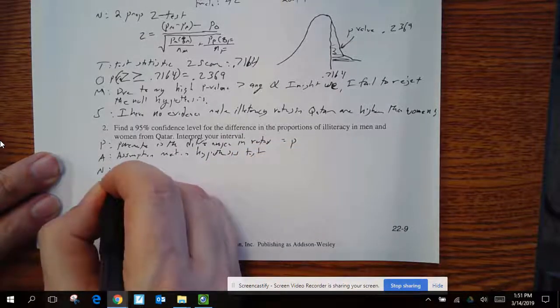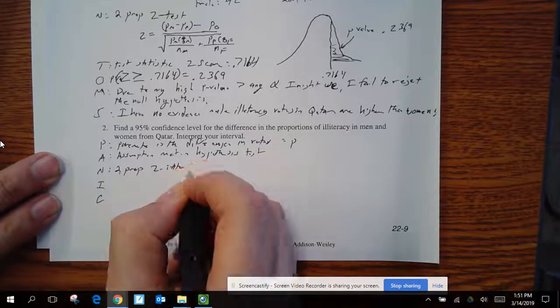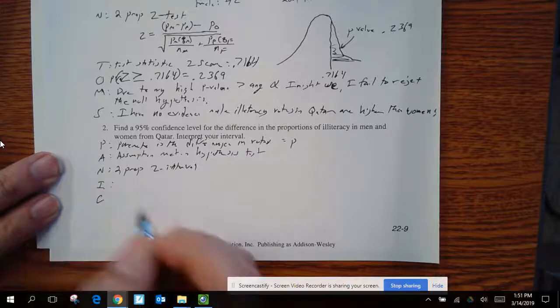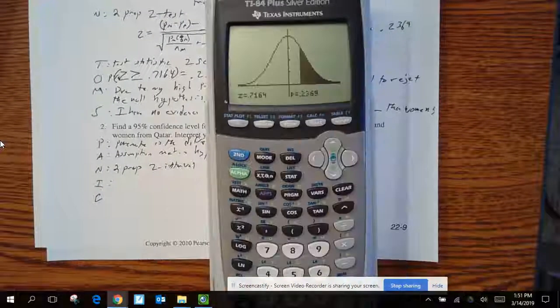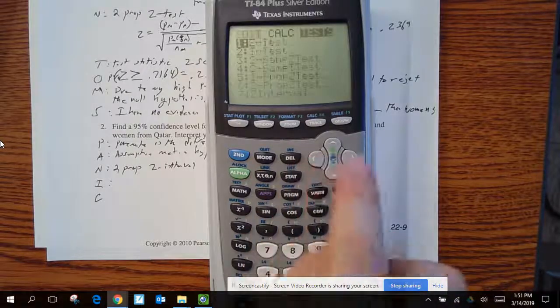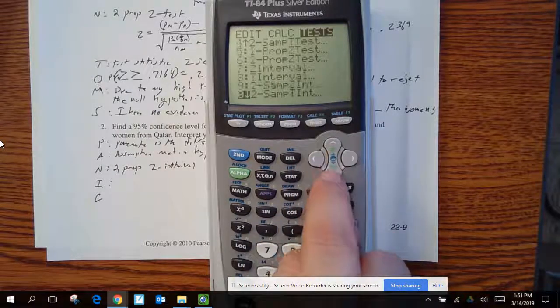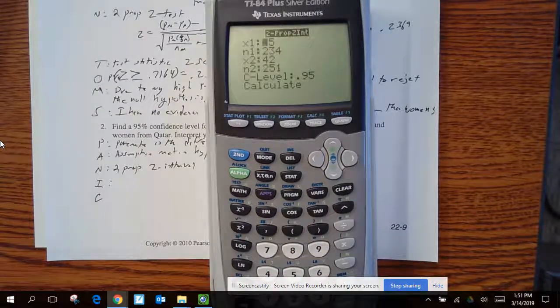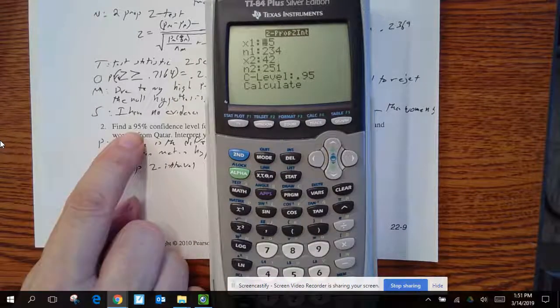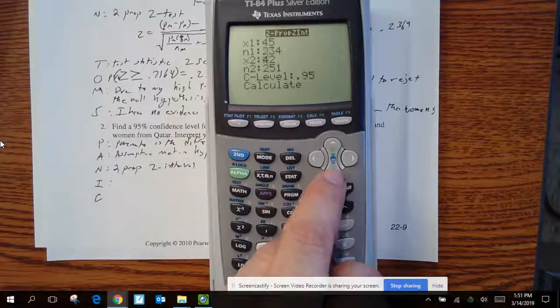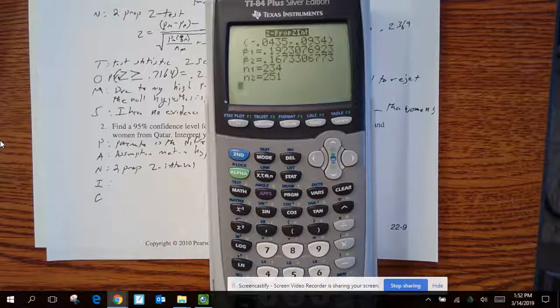I'm going to do a 2-proportion z-interval. Now, I'm actually going to run my interval. Go on my calculator again. Stat, test, 2-proportion z-interval. There it is. If I go in, all my data has been brought in. I do want a 95% confidence interval. So I'm going to do a C level of 0.95. So I'm going to give my conclusion.